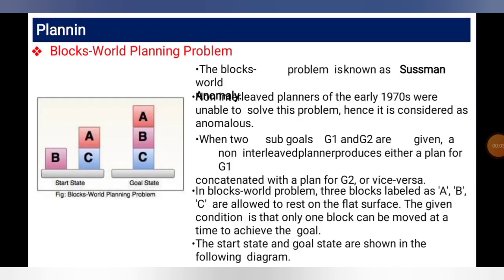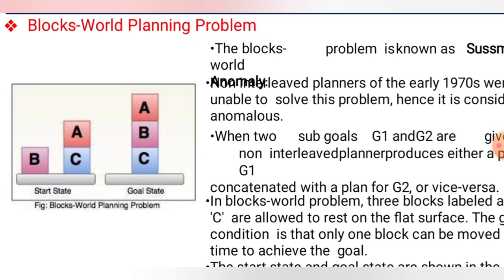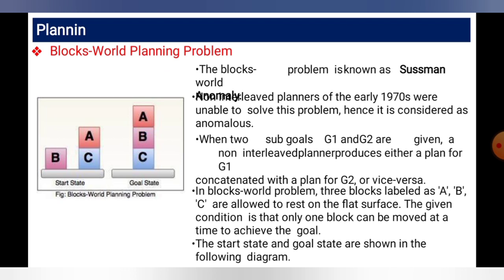Now we come to the next point: the block world planning problem. In the left screen you can see a start set and a goal set. This problem, found in the 1970s, is considered anomalous because when two sub-goals g1 and g2 are given as shown in the figure, they are non-interleaved. A plan to achieve g1 is not connected to a plan for g2, or vice versa.